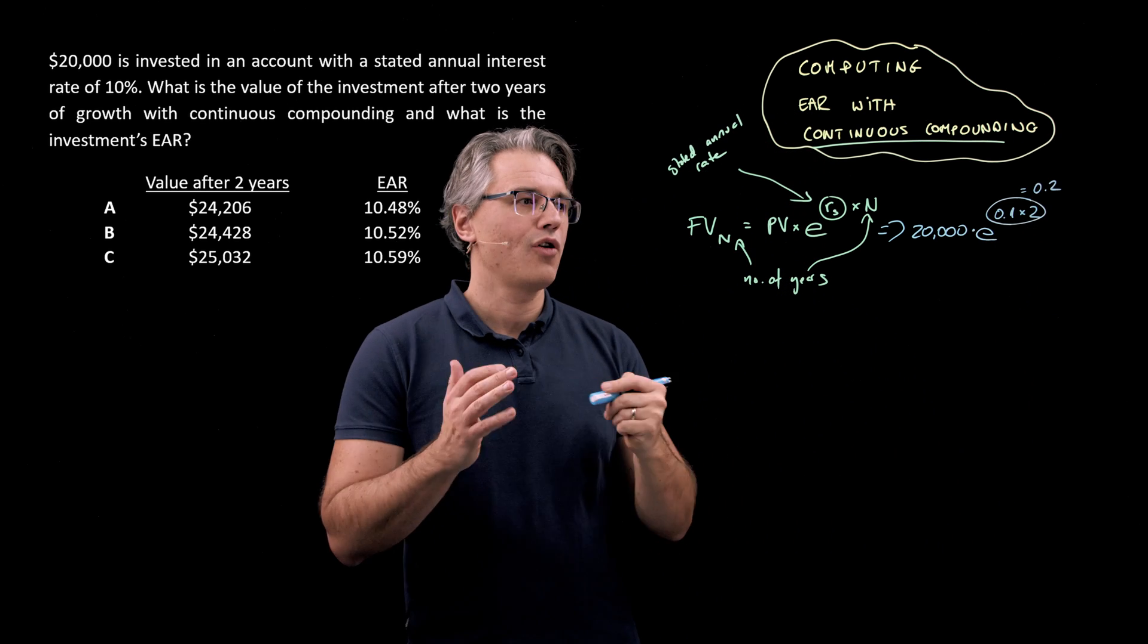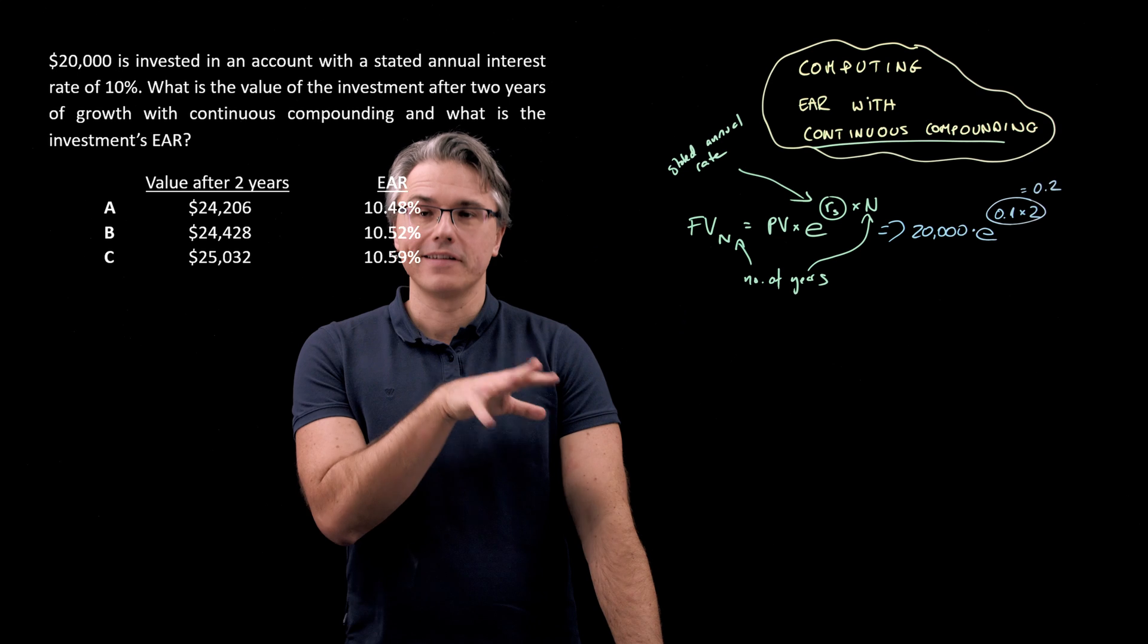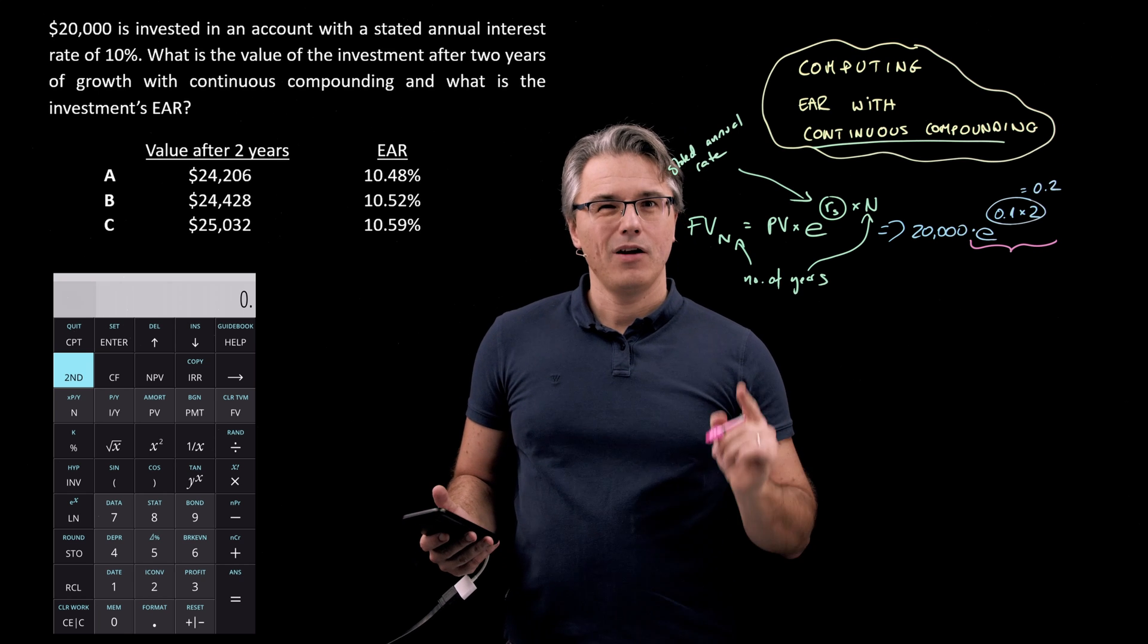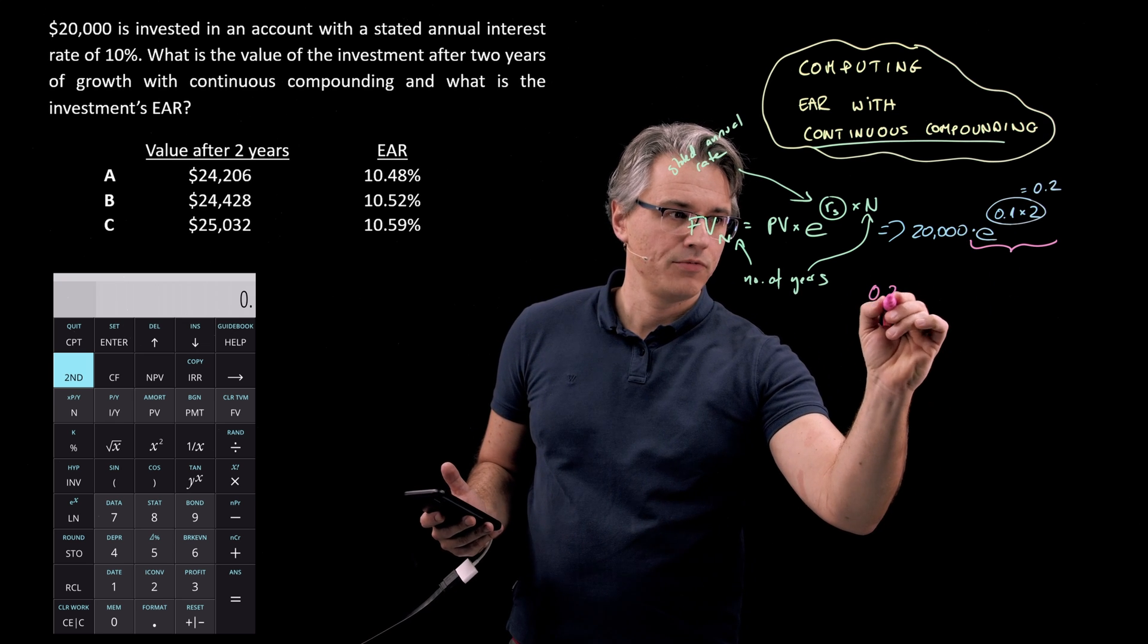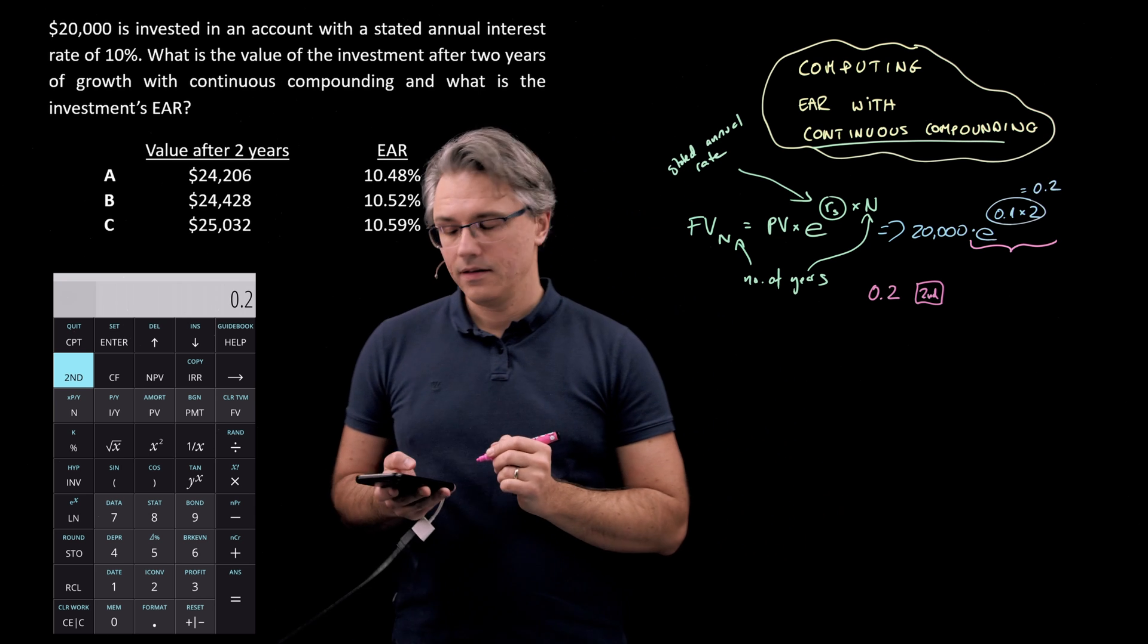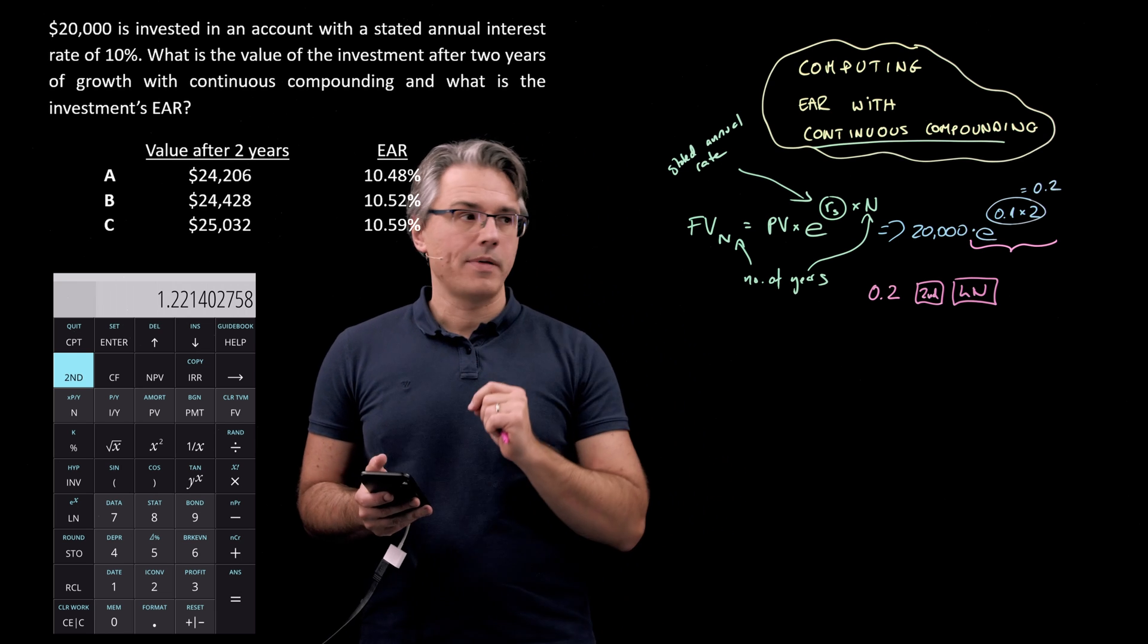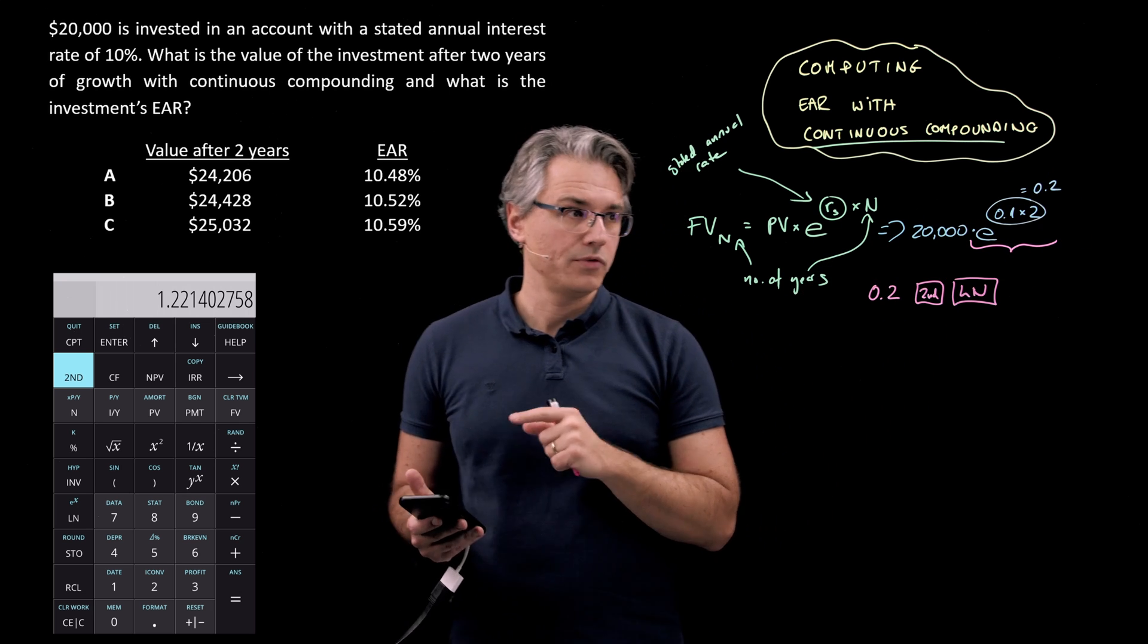Now how do you work with this on the calculator? What I suggest you do is use a certain logic which I'm going to show you. So let's get the calculators out. In order to properly get this term, so E raised to a certain power, what I suggest you do is you type in the power. So that's 0.2, followed by second and then the LN key which is the natural logarithm key. So second LN and as the secondary function of that key you see E to the power of X.